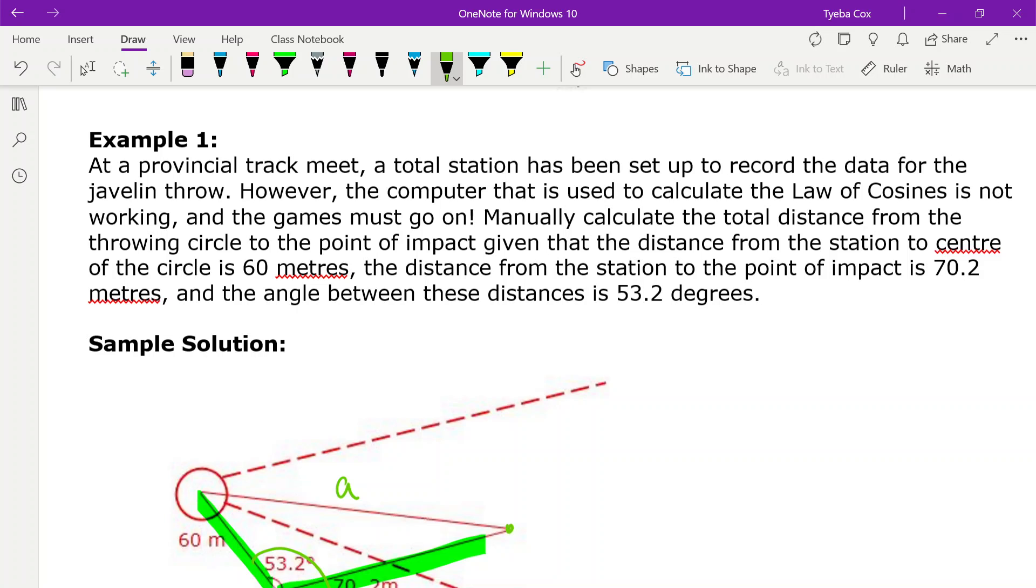So let's call this B. 60 meters, we'll call that B. And the 70.2, we'll call that C. Okay, I don't care about the other angles.